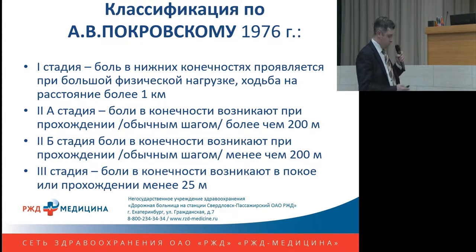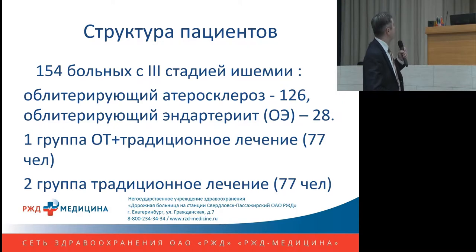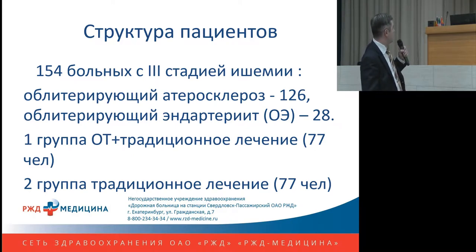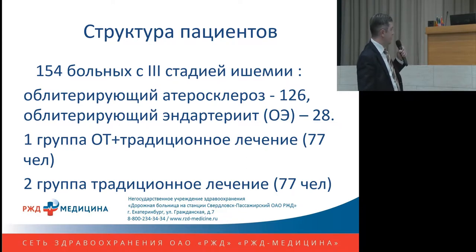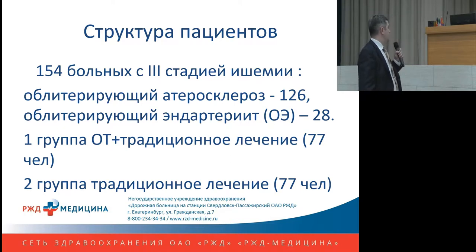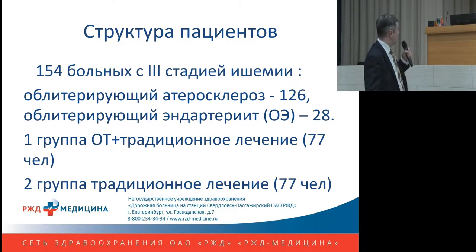The Pokrovsky classification third-stage patients could not walk more than 25 meters. This research included 154 patients with third-stage ischemia obliterating atherosclerosis, including 126 patients, and 28 patients with obliterating endarteritis. The first group included 77 patients who received ozone therapy in combination with traditional treatment. The second group received traditional treatment only, including disaggregants and synthetic analogues of prostaglandin E.